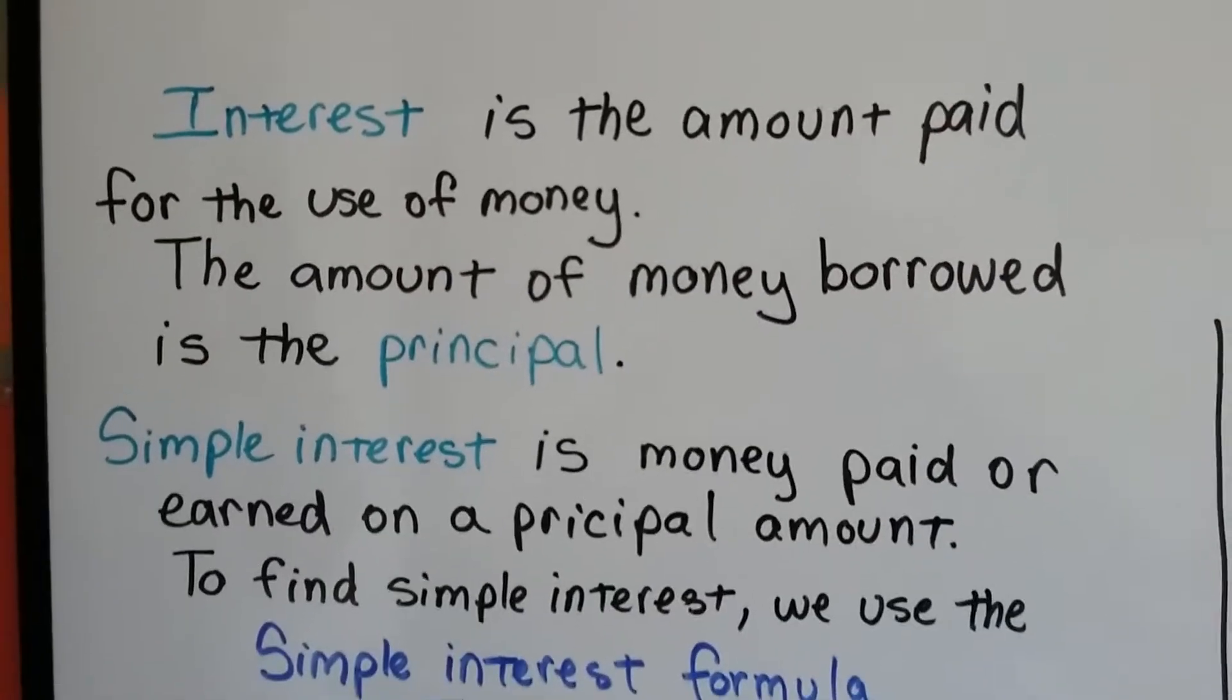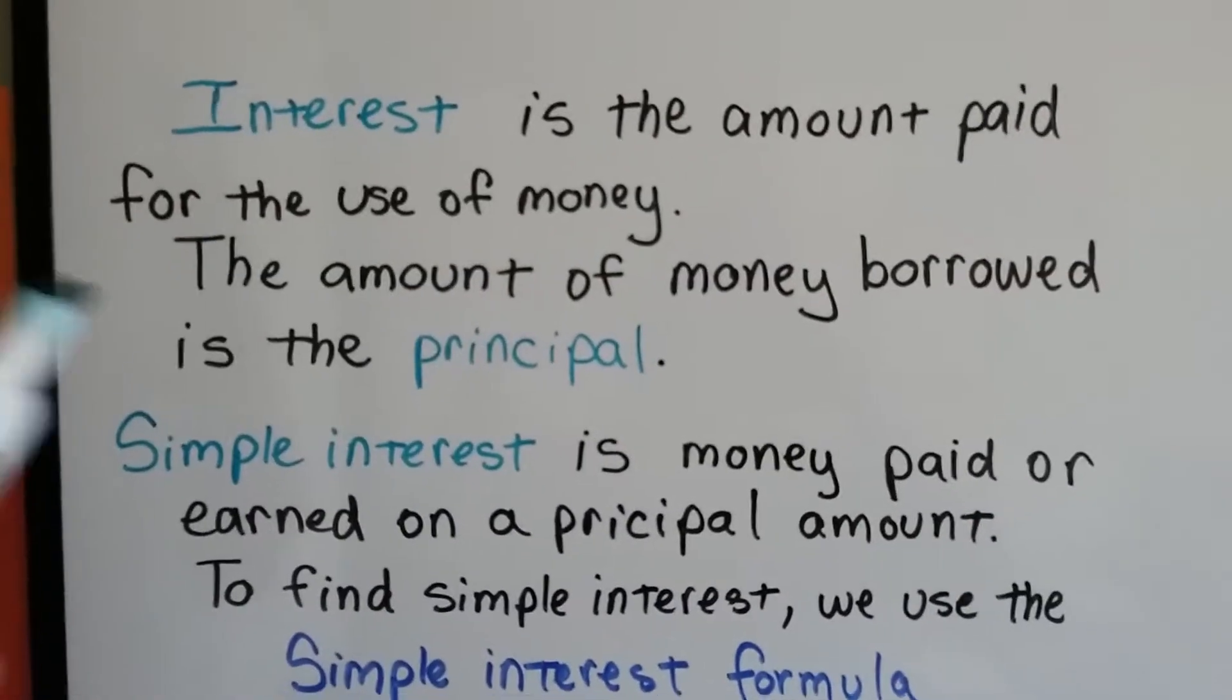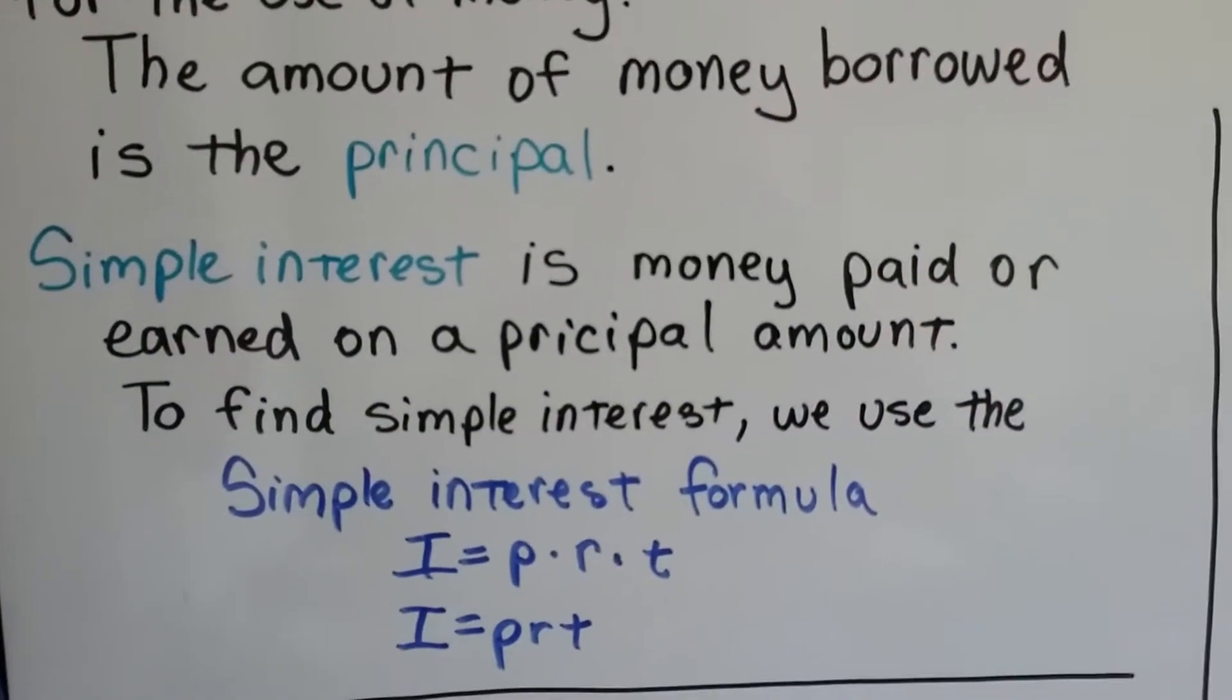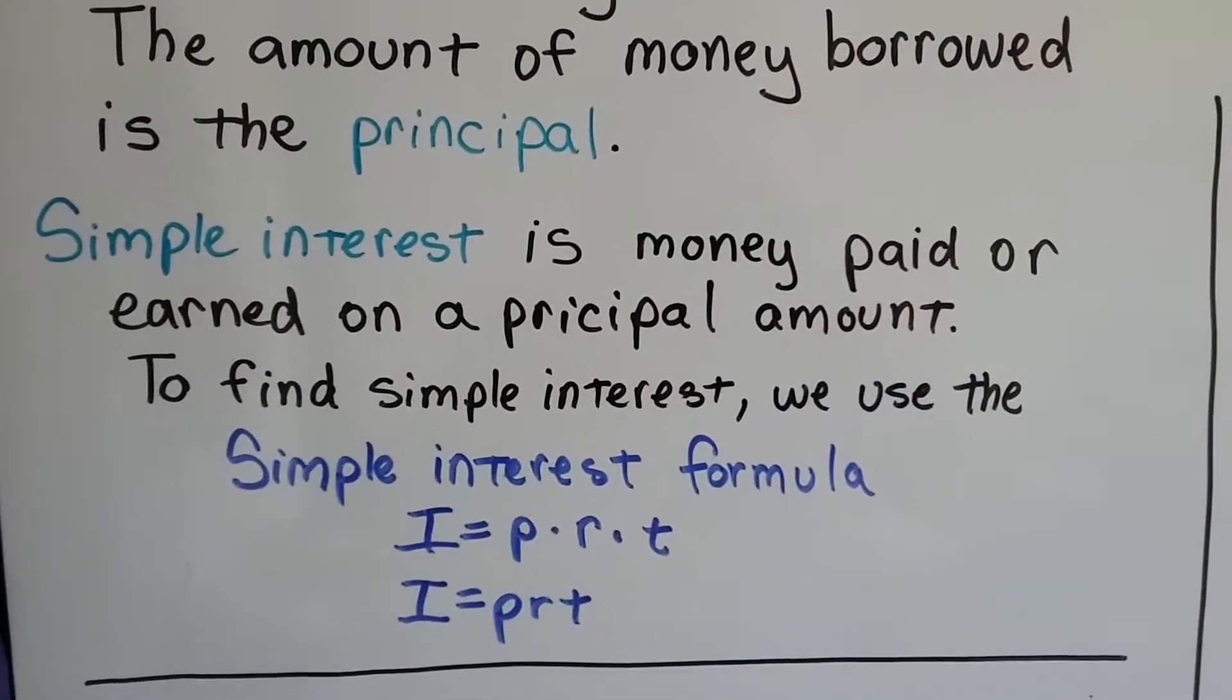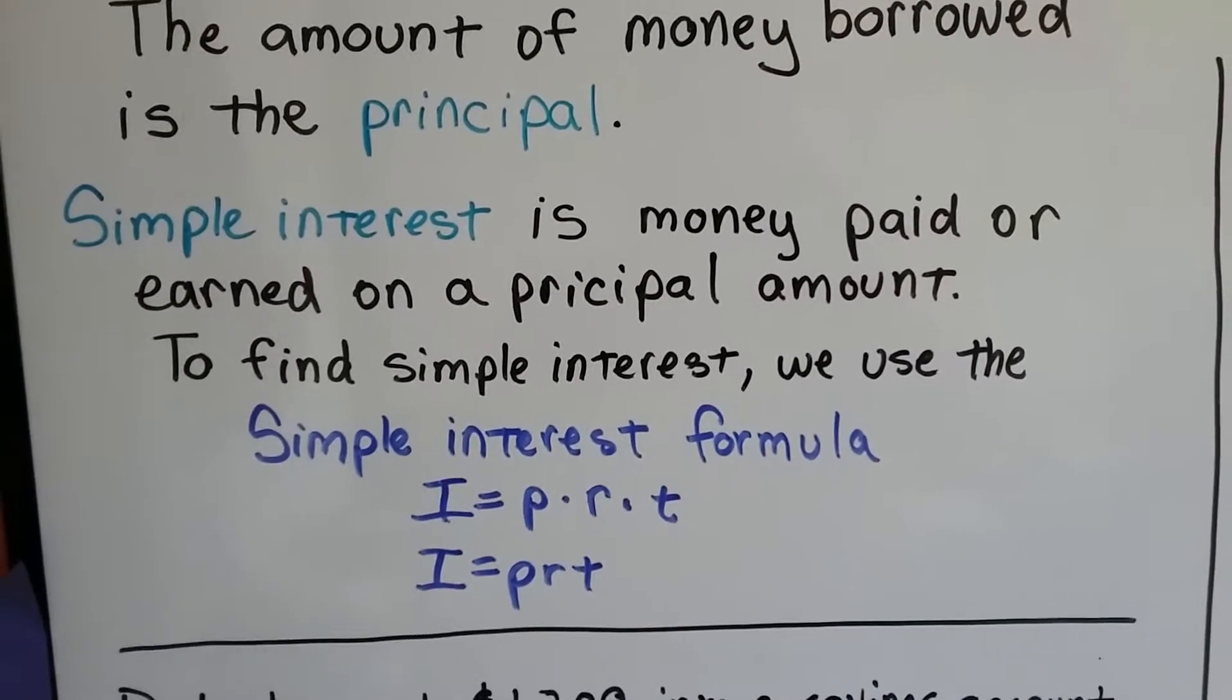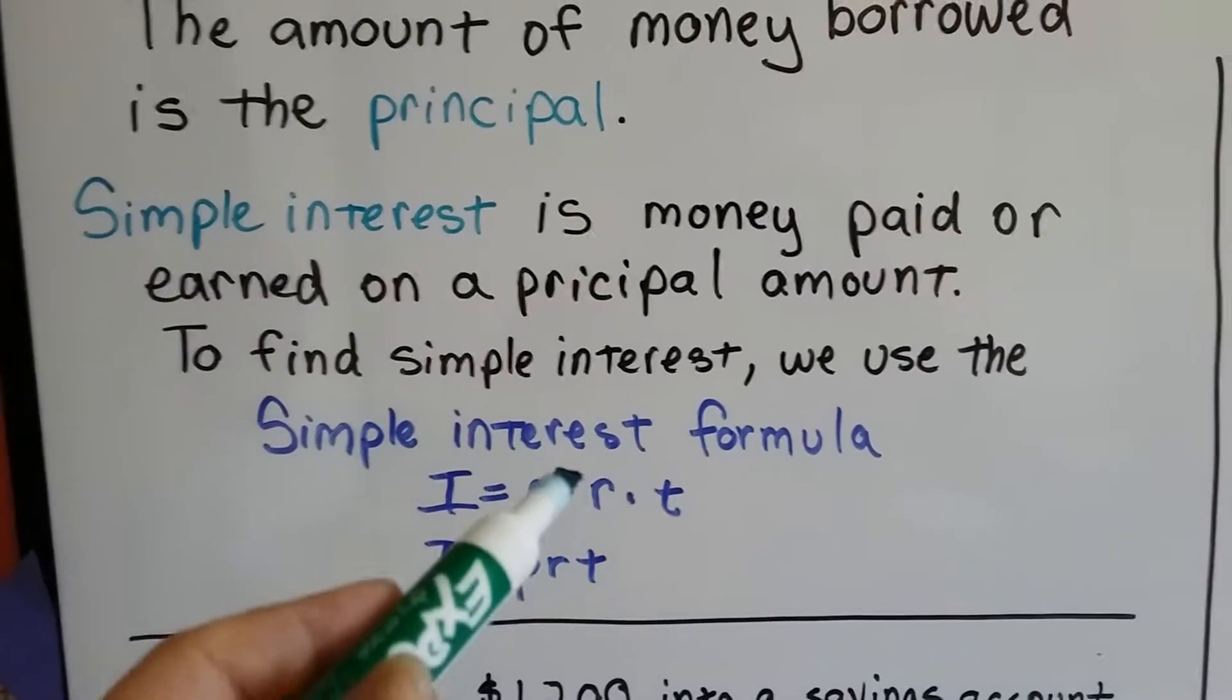The principal is that amount of money, either you have in the bank or the amount you borrowed. Simple interest is money paid or earned on a principal amount. To find simple interest, we use the simple interest formula: I equals PRT, principle times rate times time.